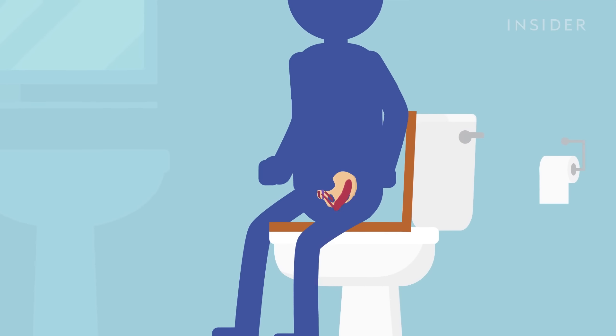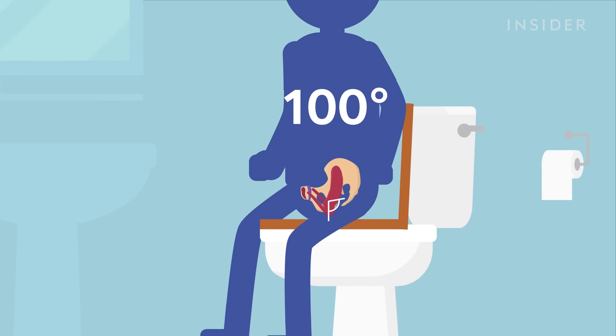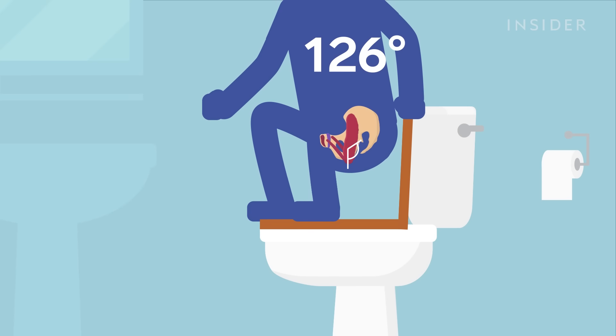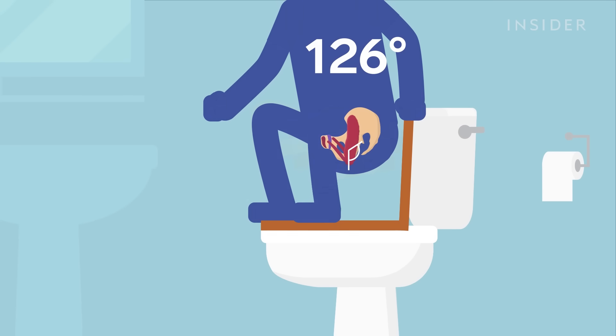When you sit, that angle unfolds to about 100 degrees, and squatting opens it even further. Opening up that pathway makes it easier for stuff to slide on through.